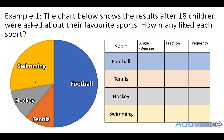So about 9 children liked football. A quarter, just over a quarter, liked swimming, so maybe you can guess how many people liked swimming. Then it looks like the same number liked hockey and tennis. It gives us a really good idea of the data in fractions and proportions. But to be accurate, we need to get our protractor out and measure some angles for a proper idea of what's going on.